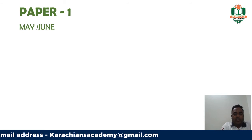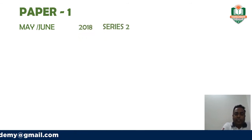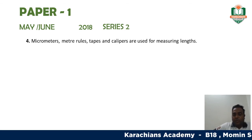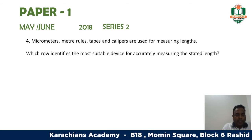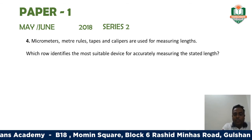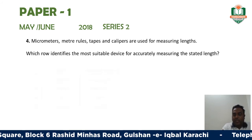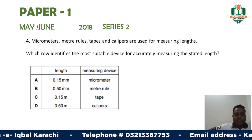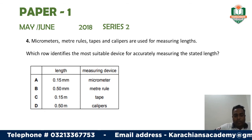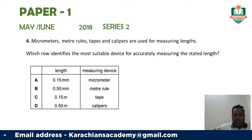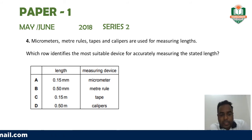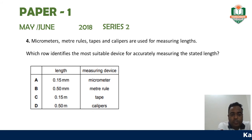The next question is taken from the May/June 2018 exam, Series 2. The question states: micrometers, meter rules, tapes, and calipers are used for measuring length. Which row identifies the most suitable device for accurately measuring the stated length? Some lengths are listed in column one and the measuring device in column two. Option A is 0.1 mm — for this we use a micrometer.